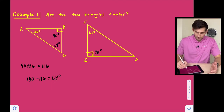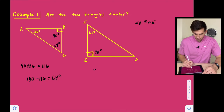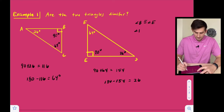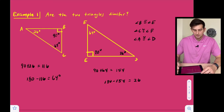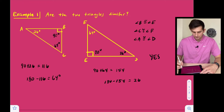We know that angle B is congruent to angle E. Now let's figure out angle D. We do 90 plus 64 to get 154, then 180 minus 154 gives us 26 degrees. So angle C was 64 degrees, which is congruent to angle F, and angle A was 26 degrees, which is congruent to angle D. Since all three angles are congruent to each other, yes — these two triangles are similar.